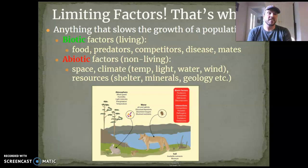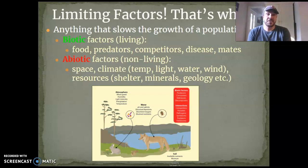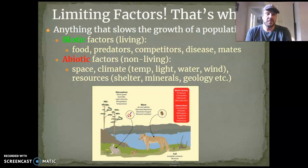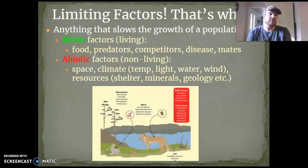Abiotic factors — if you put an 'a' in front of anything scientific it means without, so this is non-living or 'without life' factors. Space: if I don't have enough space, my species won't reproduce in that exponential unchecked way. Climate: if the temperature is too low or too high, or there's not enough light for photosynthetic organisms to produce sugars for us to eat, or not enough water, I'm not going to reproduce as well. Also, if there are just not enough resources like shelter, minerals, and geology — those can be limiting too.